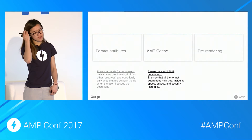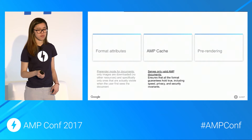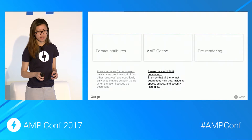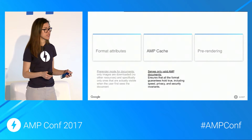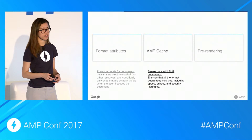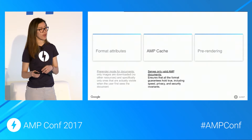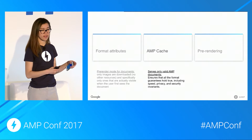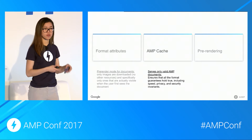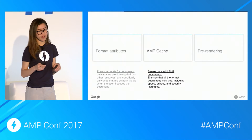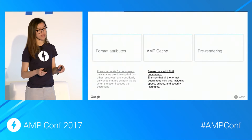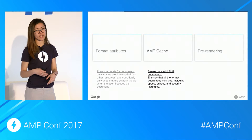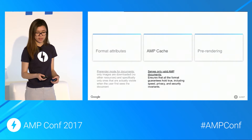Moving on to the second pillar, which is the AMP cache. Other than its obvious caching benefits like proximity, the AMP cache's primary contribution is that it only serves valid AMP documents. So everything we talked about for a valid AMP document — pre-rendering mode — is ensured by the AMP cache, because it makes sure that, as a platform, you're only getting valid AMP documents for your user experience.